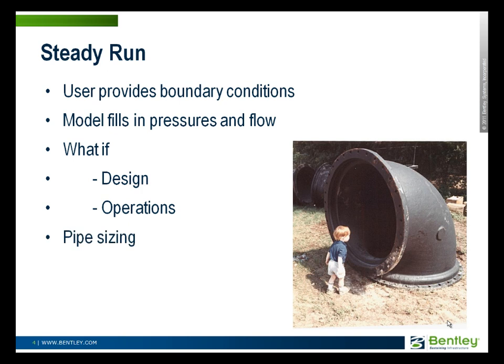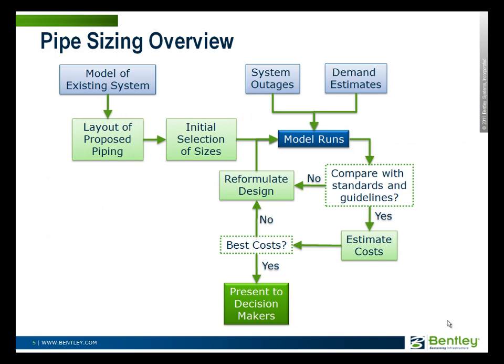The most basic of those is pipe sizing. This is a fundamental reason that these distribution models were developed in the beginning — to figure out how big pipes should be. Essentially you start off with the model of your distribution system, lay out the piping that you're proposing to use, and make your initial selection of sizes. You pick some reasonable sizes that you think are going to work, and then you run the model. In addition to running the model for the system as you expect to install it, you'd also be accounting for uncertainty in demand estimates and the potential for outages of individual components.